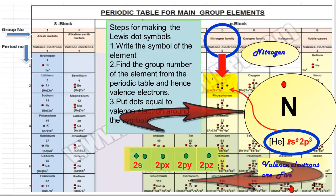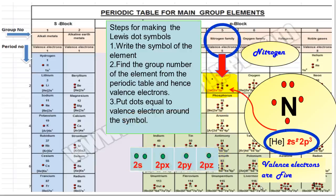2 dots as a pair—these are the electrons present in 2s orbital. The remaining 3 electrons will be unpaired. These 3 electrons are from 2p orbitals.